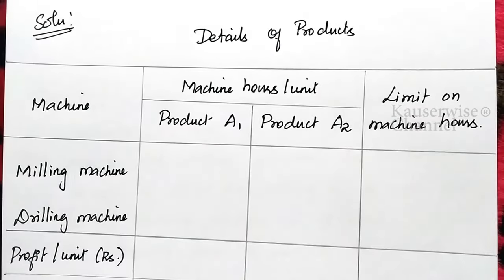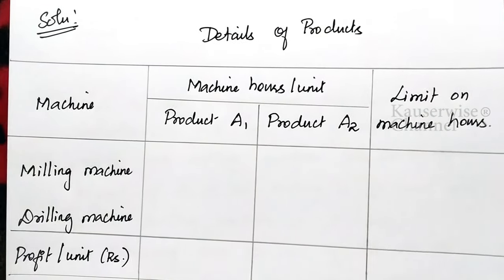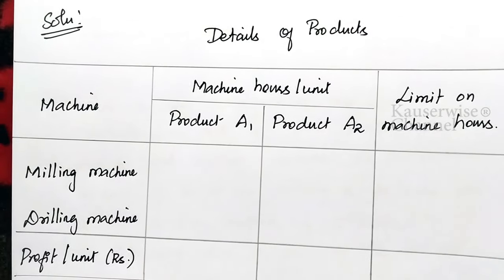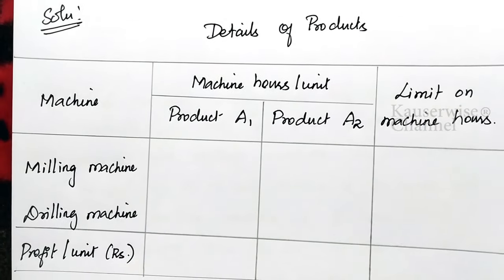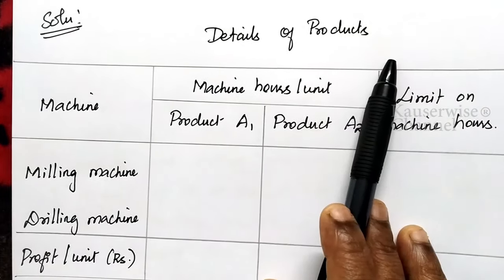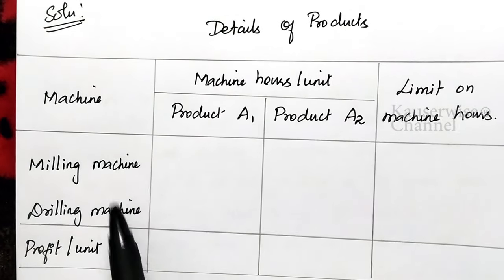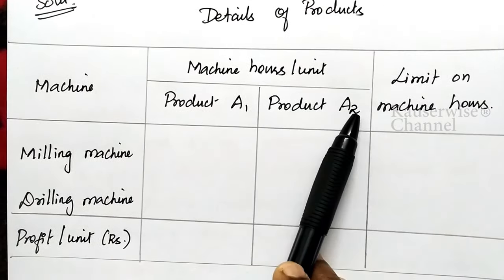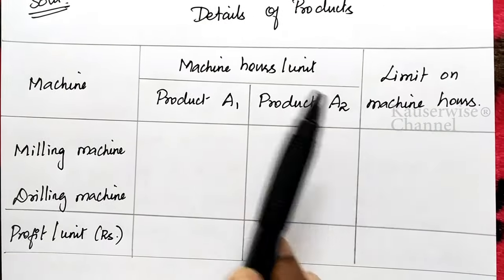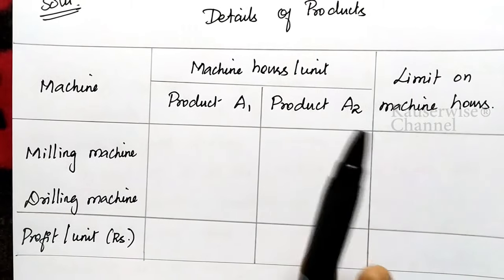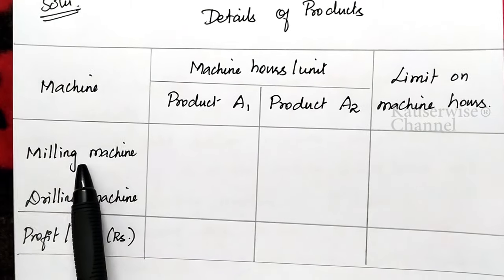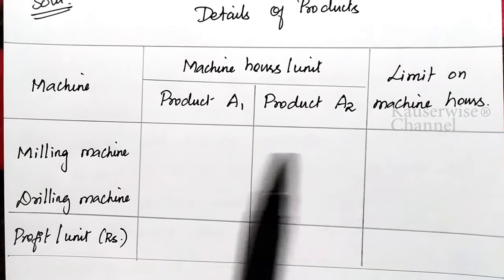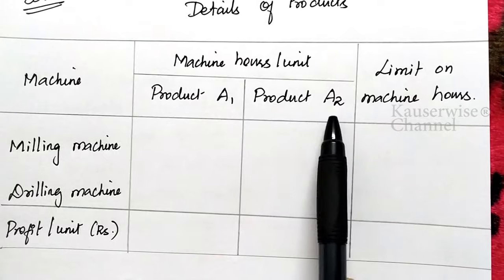Now let us see the solution. Before we formulate the LPP model, the first step is to prepare a tabular column based on the information given in the problem. Here, details of product: there are two different machines — milling and drilling — and two products, A1 and A2. The machine hours required per unit are also given.